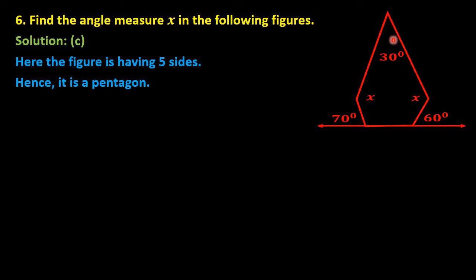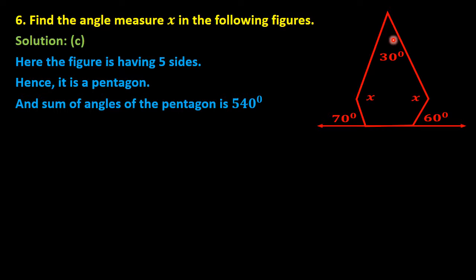In a pentagon, if we add all five interior angles, we get 540 degrees. We need to add all five angles of this pentagon and equate them to 540 degrees in order to find the value of x.